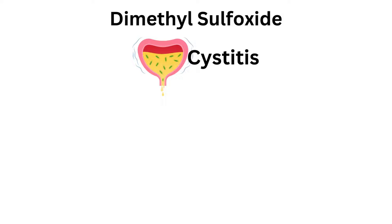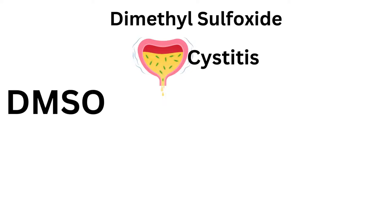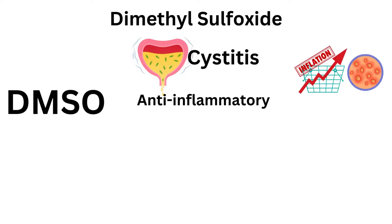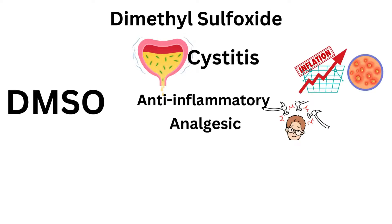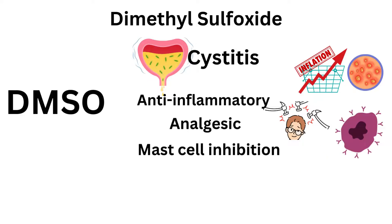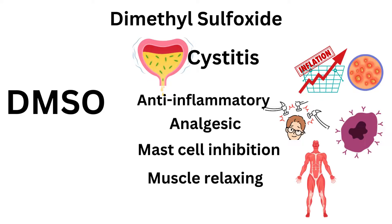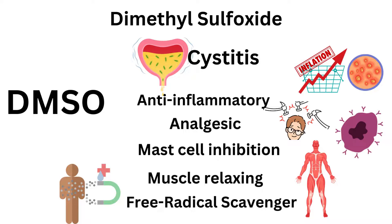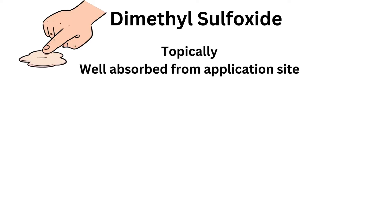Mechanism of action: for management of cystitis, dimethyl sulfoxide (DMSO) has anti-inflammatory, analgesic, and mast cell inhibition and muscle-relaxing effects. DMSO also has free radical scavenger properties, which increases the removal of vesicant drugs from tissues to minimize tissue damage in extravasation management.